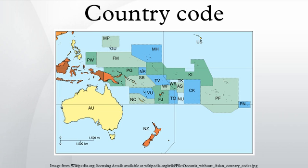The United Nations Development Programme also has its own list of trigram country codes. The World Intellectual Property Organization's WIPO ST.3 gives two-letter codes to countries and regional intellectual property organizations. The World Meteorological Organization has its own list of country codes used in reporting meteorological observations. UIC country codes. The developers of ISO 3166 intended that in time it would replace other coding systems in existence.